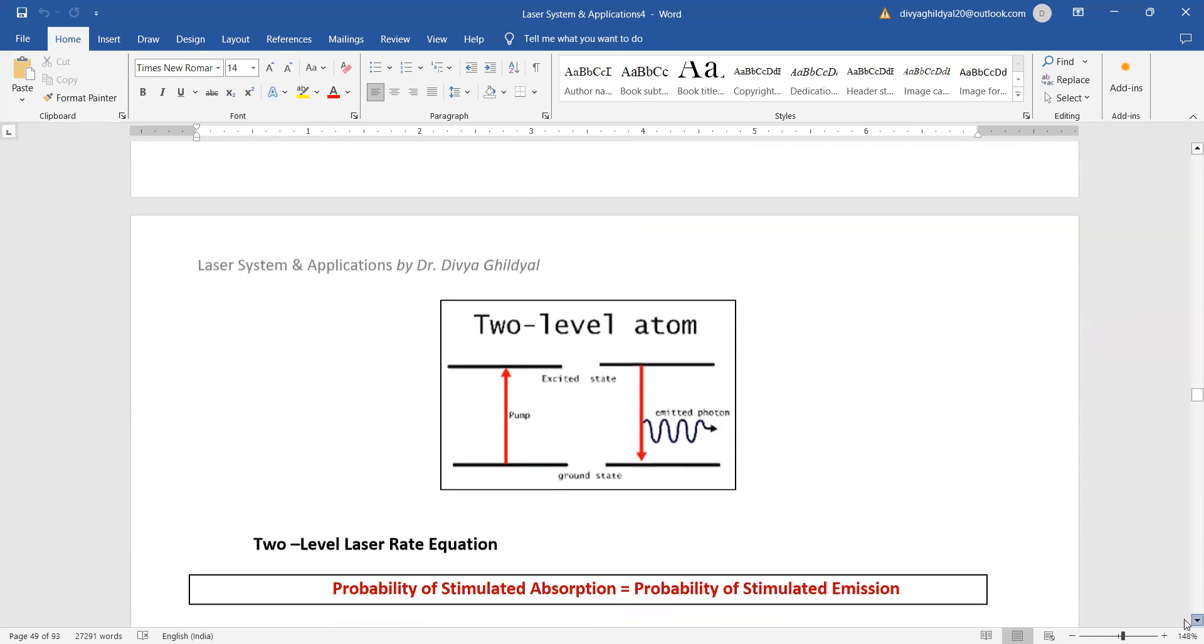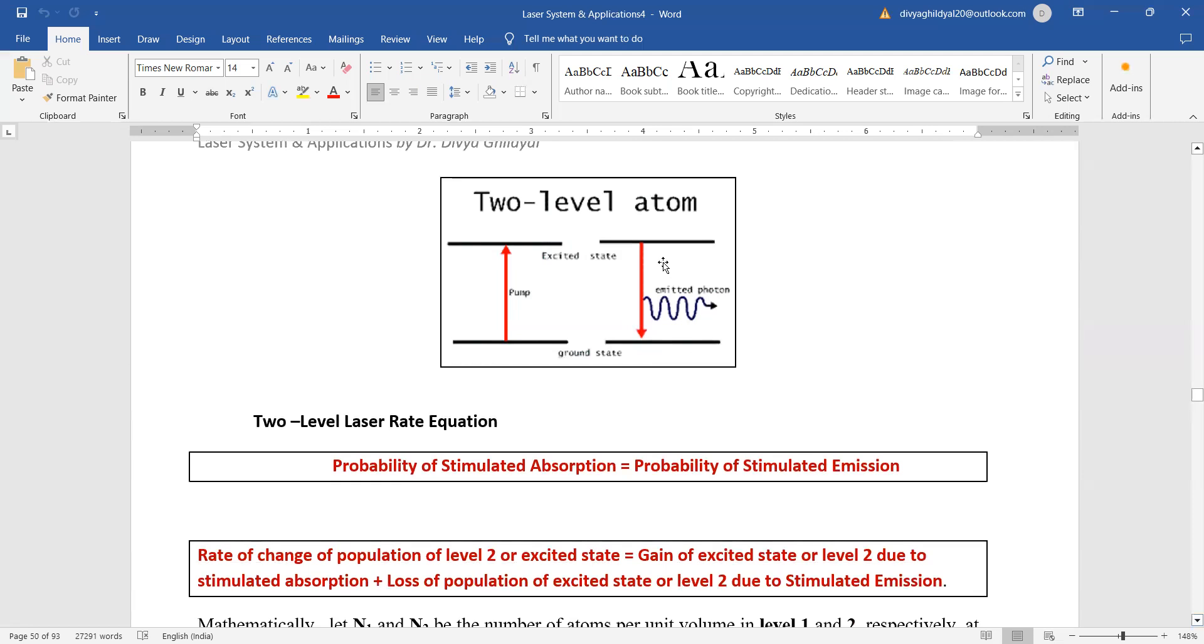As you can see in this energy level diagram, laser action is only obtained when atoms drop from the metastable state. This is not possible in two-level, hence two-level setup does not show laser action.